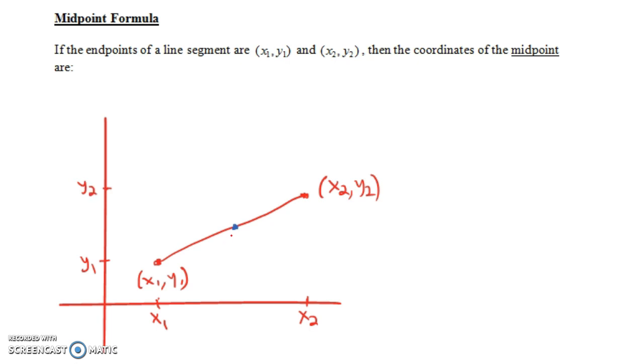Now notice that the x-coordinate of the midpoint should be halfway in between the x-coordinates of the original two points. So how do we find a number that's halfway in between x1 and x2? Well, essentially what we're trying to do is find the average of x1 and x2.